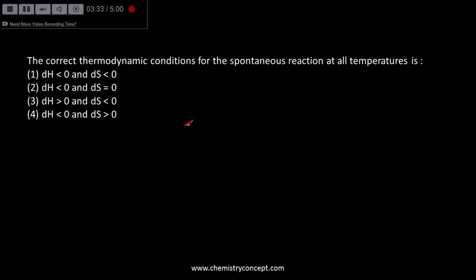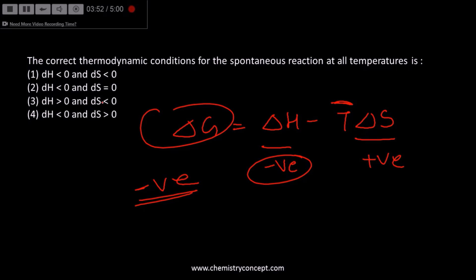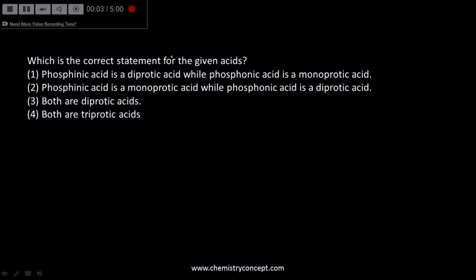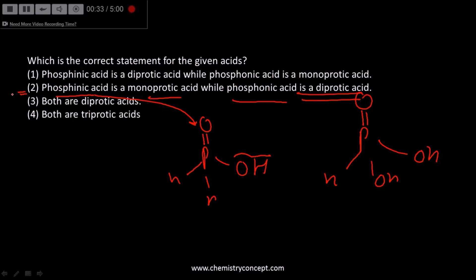For a reaction to be spontaneous, as per the Gibbs-Helmholtz equation ΔG = ΔH − TΔS, if ΔS is positive and ΔH is negative, then ΔG will always be negative regardless of temperature. Regarding statement 2, phosphonic acid is monoprotic — its structure has P with 2 H and only 1 OH group. Phosphoric acid has 2 OH groups, making it diprotic. So statement 2 is correct.